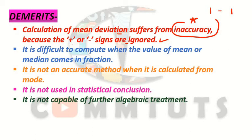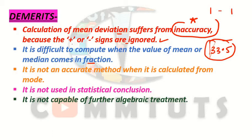The second demerit is that it is difficult to compute when the value of mean or median comes in fractions. If the mean or median value comes as a fraction or decimal, then calculating mean deviation from it becomes a difficult procedure. For example, if your mean comes out to 33.5, then calculating deviations after that becomes difficult. If the value comes in fractions or decimals, the calculation becomes a bit lengthy.